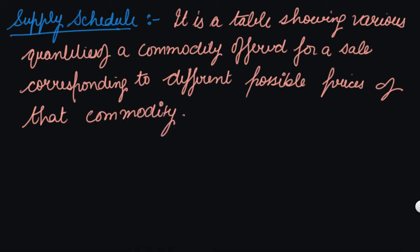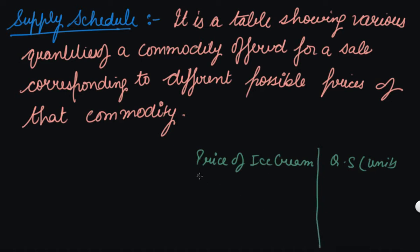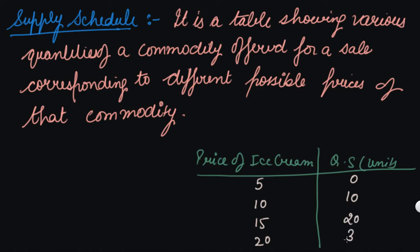Let me frame a supply schedule. These are the price of ice cream, and this is the quantity supplied in units. The prices are 5, 10, 15, and 20, and the corresponding quantities supplied are 0, 10, 20, and 30.